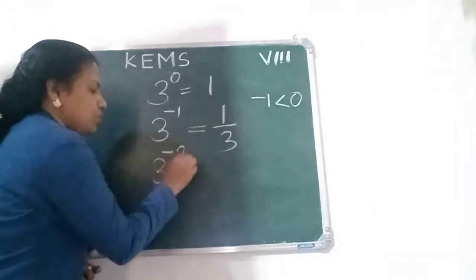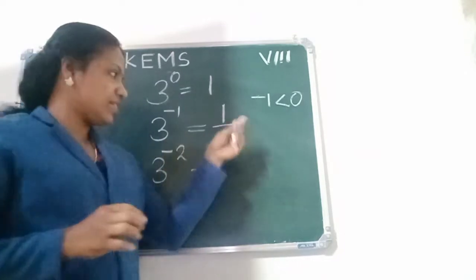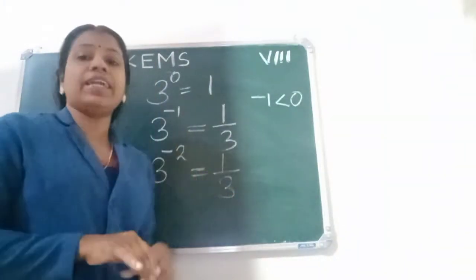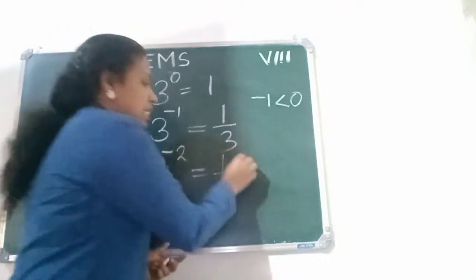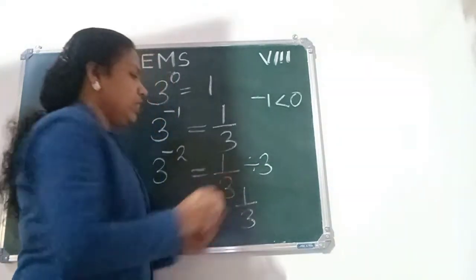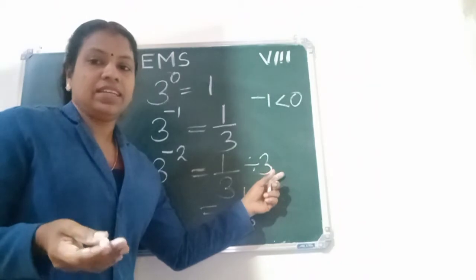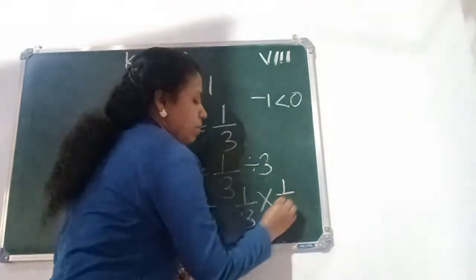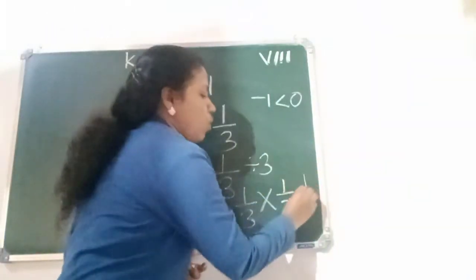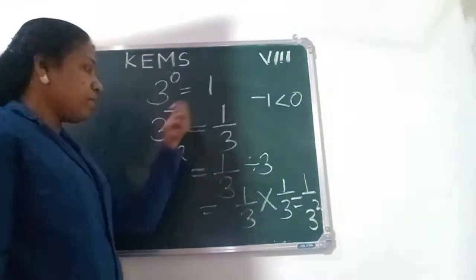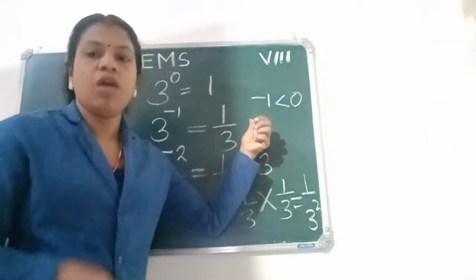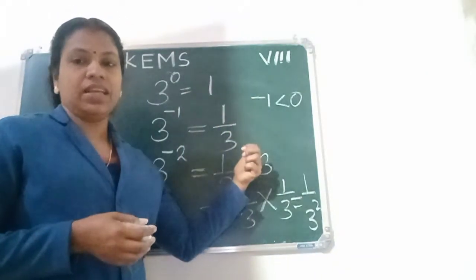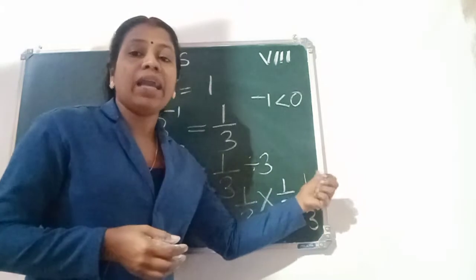What about 3 raised to minus 2? Since 3 raised to minus 1 is 1 by 3, then 3 raised to minus 2 is 1 by 3 divided by 3. Using fractional division — change division to multiplication with reciprocal — 3 power minus 2 becomes 1 by 3 squared. So 3 raised to minus 2 is 1 by 3 power 2.